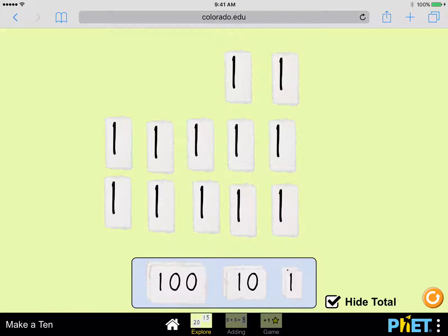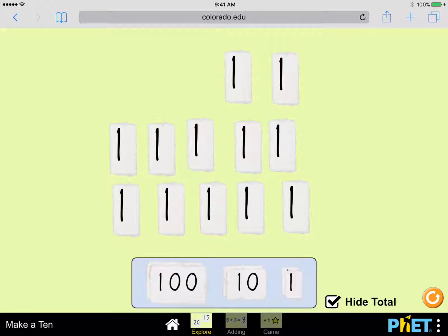Well, in the number 12, we should have 12 ones. 1, 2, 3, 4, 5, 6, 7, 8, 9, 10, 11, 12. 12 ones makes 12.